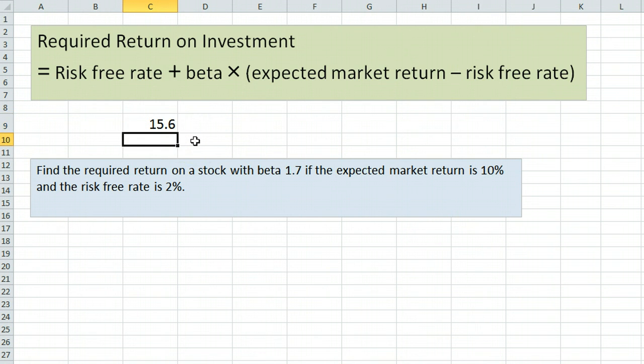We'll hit enter. It gives us 15.6% as the required return on this stock. So we must require this stock to earn 15.6% in order to justify the risk of owning it.